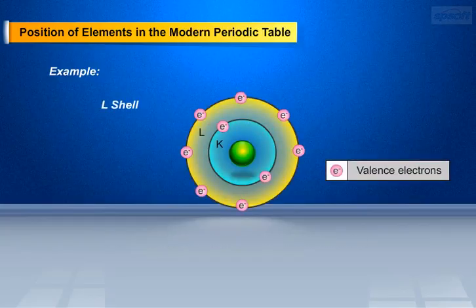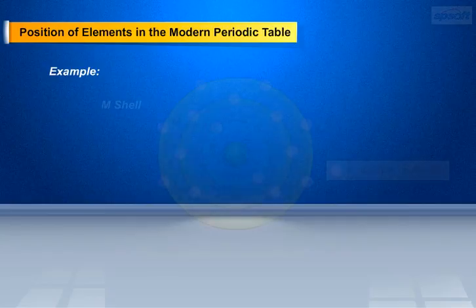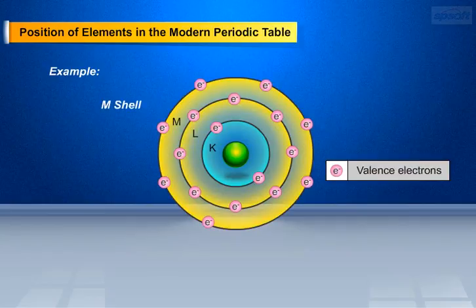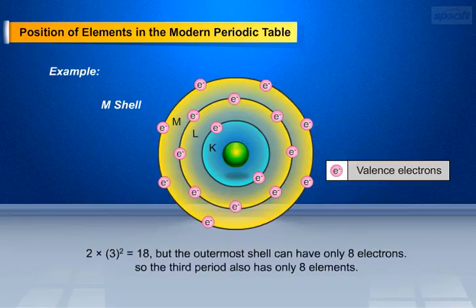In L shell N equals 2, as L shell is the second shell from the nucleus. Then 2 × 2² equals 8, hence the second period has 8 elements. In M shell N equals 3, as M shell is the third shell from the nucleus. Then 2 × 3² equals 18, but the outermost shell can have only 8 electrons, so the third period also has only 8 elements.